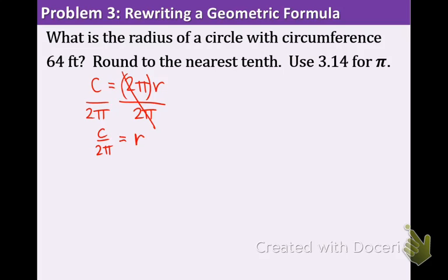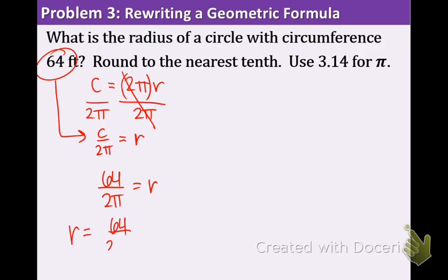Now we know the circumference is 64, so we plug that in: r equals 64 divided by 2 pi. Using 3.14 for pi, we divide 64 by 2 times 3.14. The answer is approximately 10.2 feet. So the radius of this circle is about 10.2 feet — that's a pretty big circle.